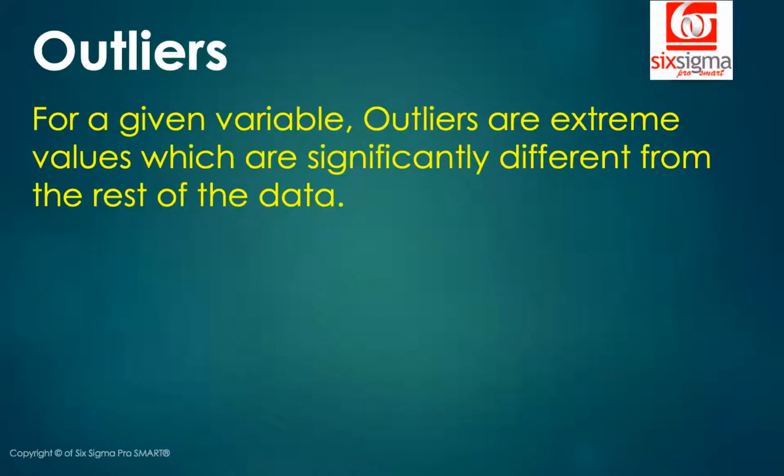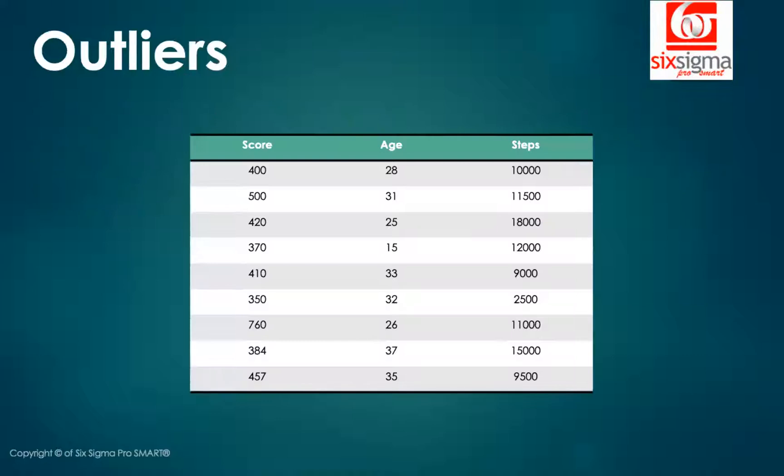So the first is outliers. What are outliers? For a given variable, outliers are extreme values which are significantly different from the rest of the data. When I say a given variable, I need to say a column. Typically in your data, your variables are the columns and rows are the observations. Now let's have a look at this data. We have three columns. We have a health score, we have the age of the participant, and we have the number of steps walked by the individual each day. Let's look at the first column called score. In this column, do you observe there's one value which is a little different from the others, 760.